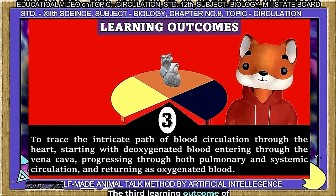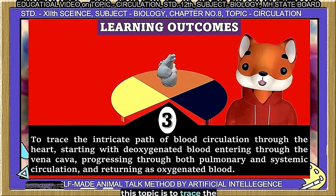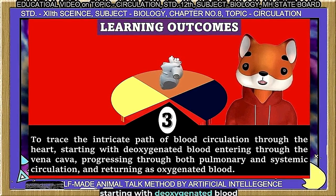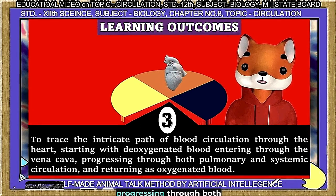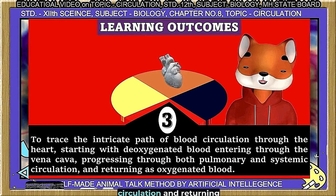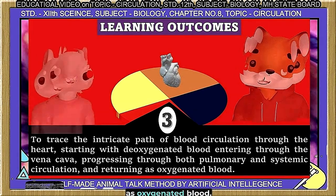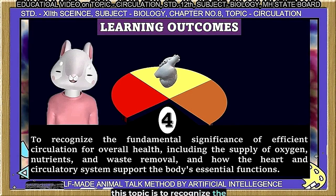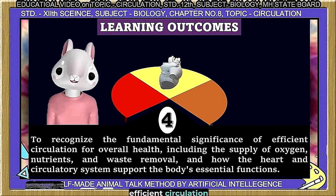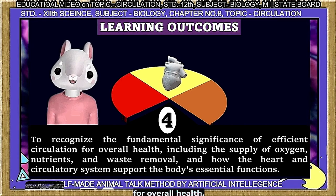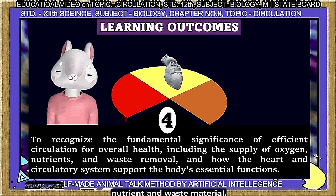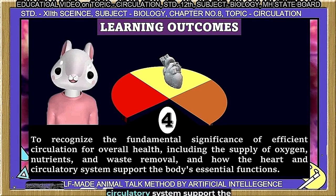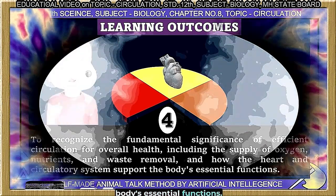The third learning outcome is to trace the intricate path of blood circulation through the heart, starting with deoxygenated blood entering through the vena cava, progressing through both pulmonary and systemic circulation, and returning as oxygenated blood. The fourth learning outcome is to recognize the fundamental significance of efficient circulation for overall health, including the supply of oxygen, nutrients, and waste removal, and how the heart and circulatory system support the body's essential functions.